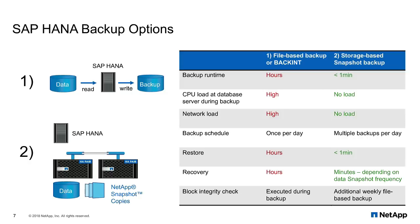The second method to do backups of the HANA database is the usage of storage-based snapshot backups. With NetApp storage-based snapshot backup, a backup is executed within seconds instead of hours, and the backup runtime is independent from the size of the database. So even for a multi-terabyte database, the backup execution is super fast. The backup is executed at the storage layer, and therefore there is no impact on the performance of the HANA database itself. Since there is no performance impact during the backup operations, customers typically schedule multiple backups per day — a quite common frequency is every four to six hours — and therefore can reduce the runtime of the forward recovery operation since they need to apply less logs.